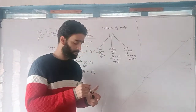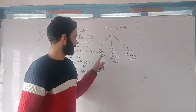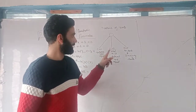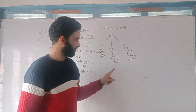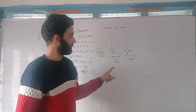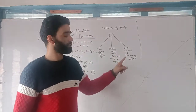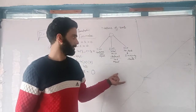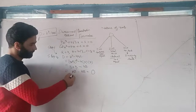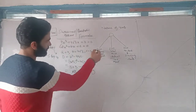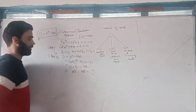Now the nature of roots: if the discriminant comes out 0, that means the roots are real and equal. If the discriminant comes out negative, then the roots are imaginary, meaning no real roots. Here the discriminant comes out 0, so the roots are real and equal. Now we apply the quadratic formula.